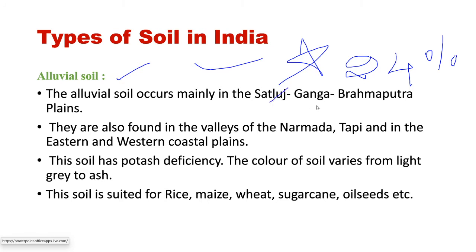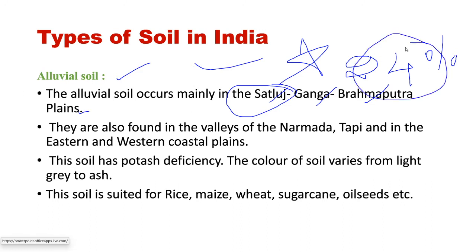The main rivers here are the Indus, Ganga, and Brahmaputra. From the Indus river to the Ganga to the Brahmaputra plains — I will show you clearly on the India map. Also found along the Narmada, Tapi — east-flowing rivers — and in the eastern and western coastal plains. 24% of the land surface of India is covered by alluvial soil.